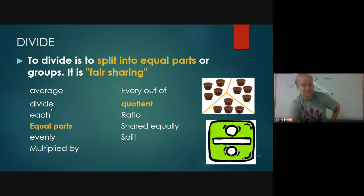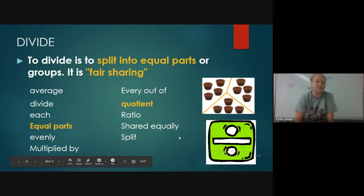The other big ones are the average, divide, each, splitting something into equal parts, evenly. Multiplied by should not be there. Every, out of, which is like every this out of this, the quotient, finding a ratio, shared equally, or split. So those are some good ones, except for the multiplied by. Ignore that. I think that might have been copy and pasted, not very well. But that's alright. So those are some big words that we'll use with identifying division problems. What else we got here?